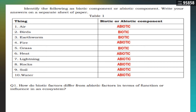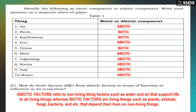How do biotic factors differ from abiotic factors in terms of function or influence in an ecosystem? Abiotic factors refer to non-living things such as water and air that support life to all living things. Whereas biotic factors are living things such as plants, animals, fungi, bacteria, and others that depend their lives on non-living things. Abiotic and biotic must interact with each other in order for their survival.